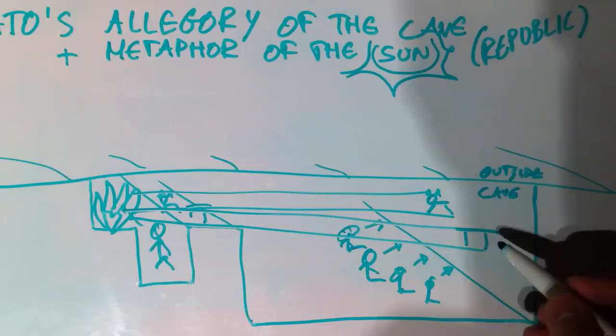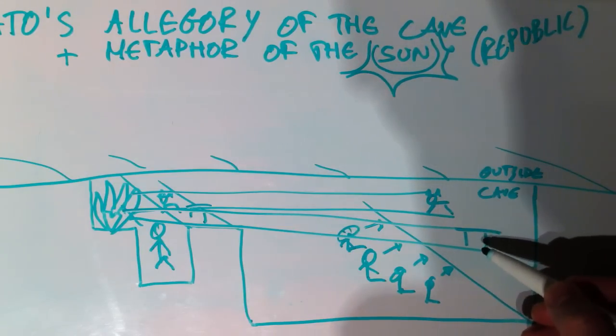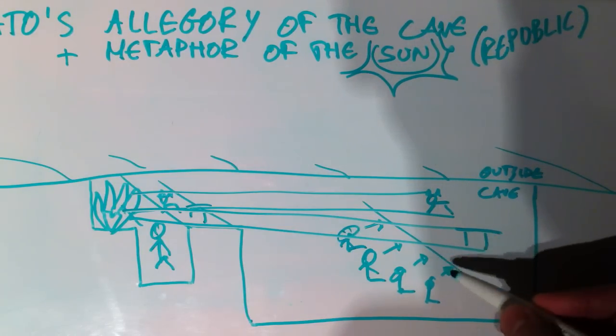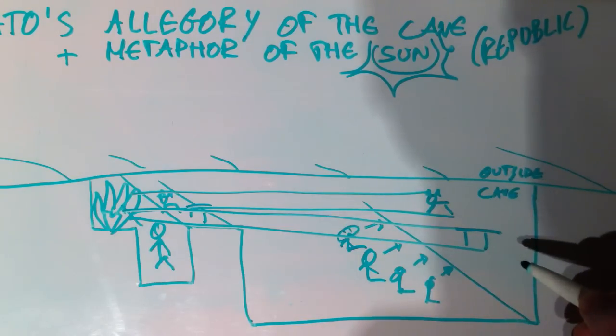And the prisoners believe that what they see on this wall, the projections on that wall, that that is the real things. They're really seeing reality, real tables, real cats, real stuff.